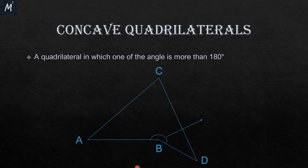Why not two or more angles greater than 180 degrees? If we have two angles which are more than 180 degrees, then the sum of these two angles alone would be more than 360 degrees. But the angle sum property of the quadrilateral says the sum of all angles must be exactly equal to 360 degrees. Hence, two angles in a quadrilateral cannot be more than 180 degrees — that is why only one angle can be more than 180 degrees.